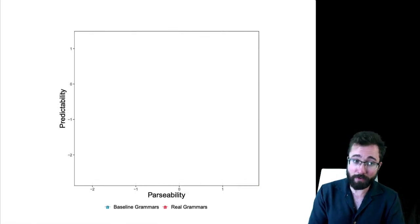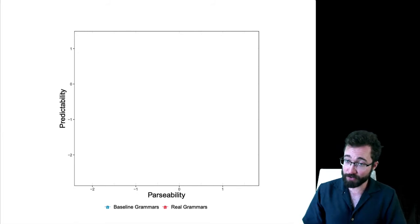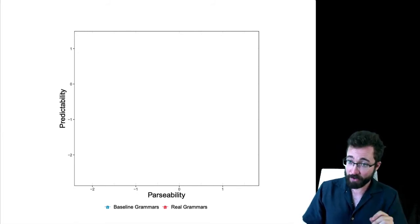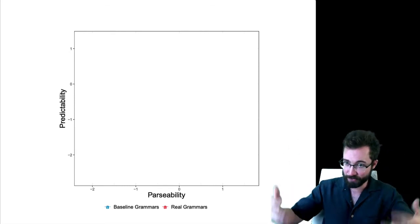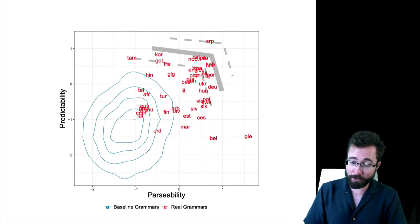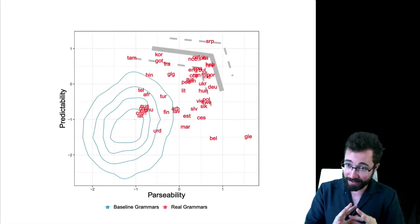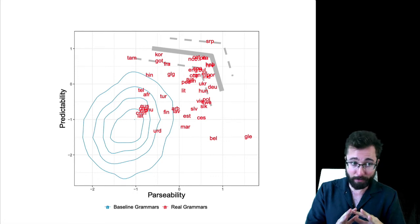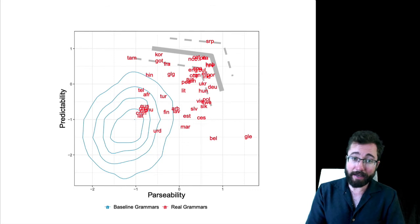We can also use this approach to visualize the predictability, which is the average surprisal, and the parsability, which is the informativity, of languages comparing real grammars, which you get by fitting those word order grammars to the observed orders in a corpus, against baseline grammars, which you get simply by using random numbers to generate those word order grammars. Here's what you get. In blue, you have here the density of random baseline grammars. They're pretty low in predictability, pretty low in parsability.